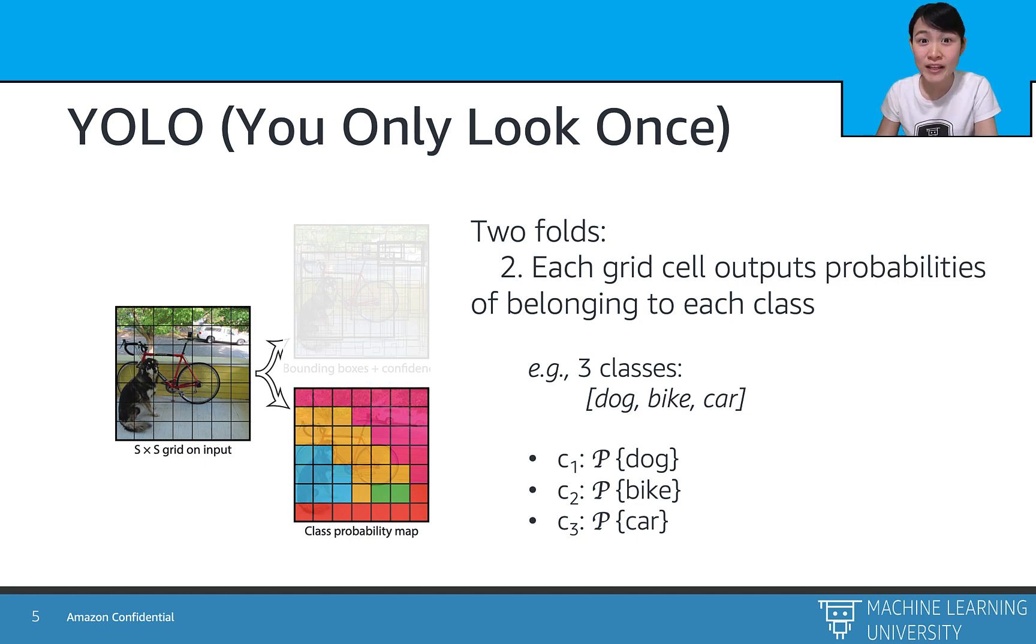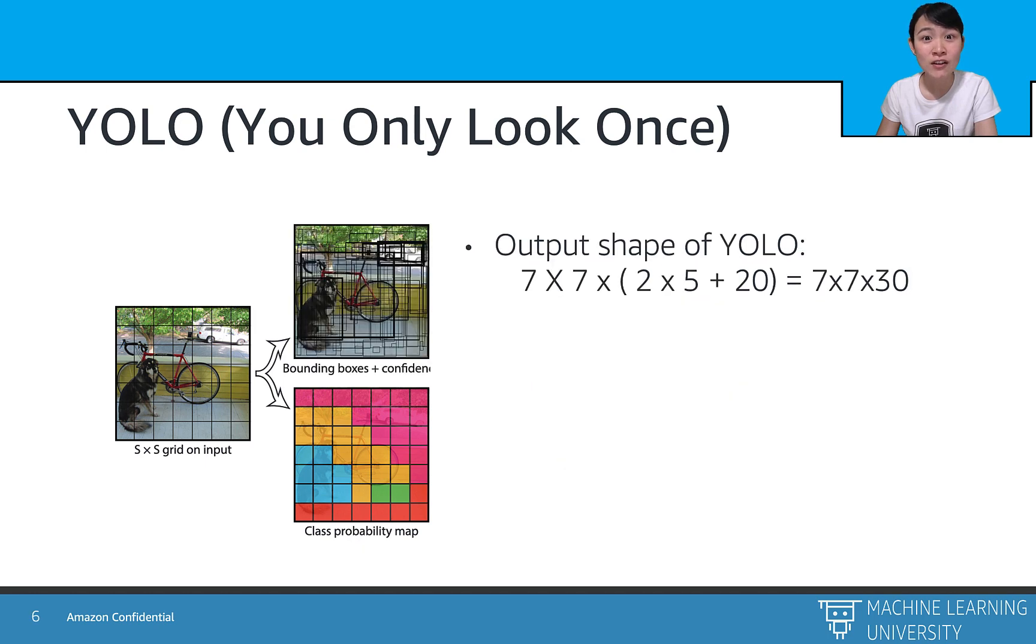If we combine these two branches of algorithm together, here is the final output for YOLO. The original network was running on Pascal VOC dataset, so it has 20 object classes.